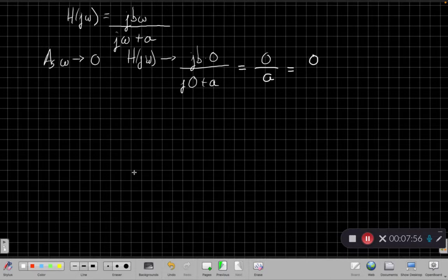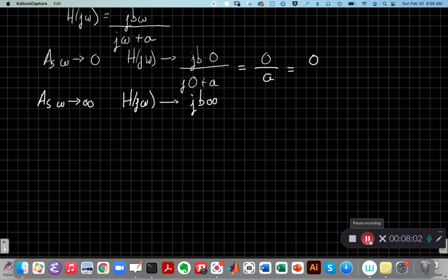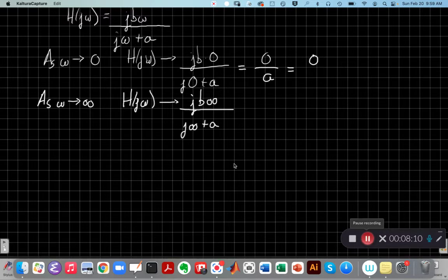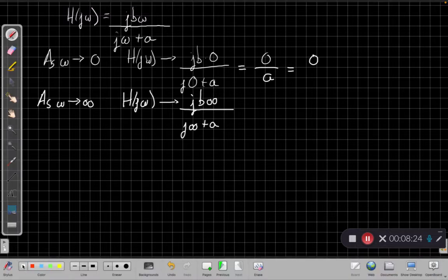What about at high frequencies? As omega goes towards infinity, the numerator becomes very large. The denominator becomes something very large plus something finite. So as ω→∞, this a becomes negligible. And I have jb∞ over j∞. And so the gain just becomes b. I can ignore this because at some point as omega gets really large, this becomes negligible.